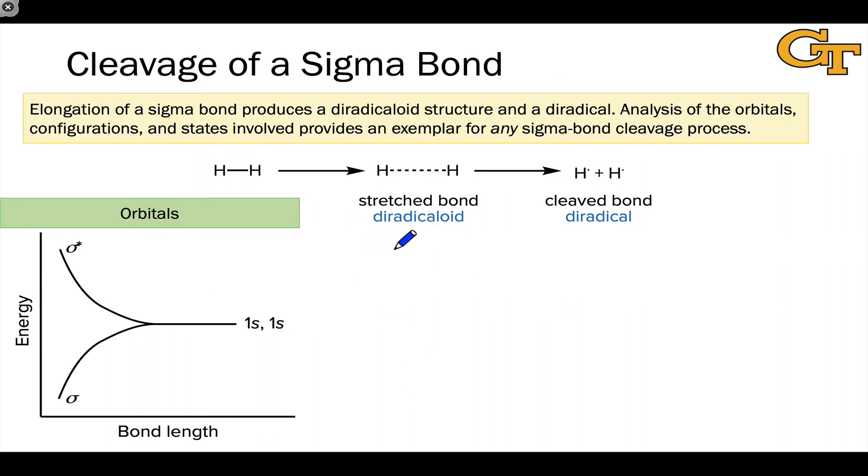So let's start with sigma bond cleavage. As a sigma bond breaks, the atoms involved move apart from each other, laterally along the bonding axis. And here we're using the prototypical example of H2, arguably the simplest sigma bond. As the two Hs move farther apart from one another, we can imagine that as moving to the right on this graph with the bond length on the x-axis.